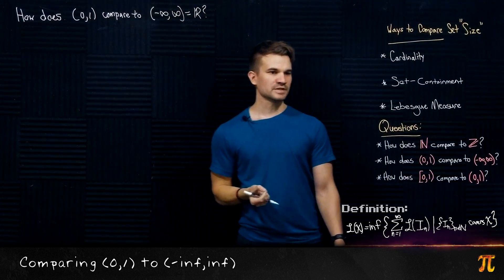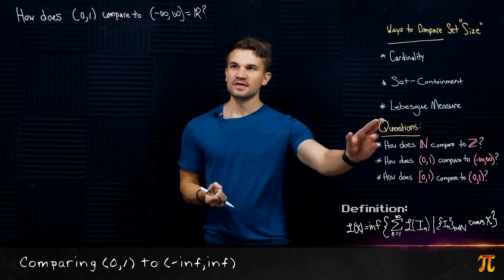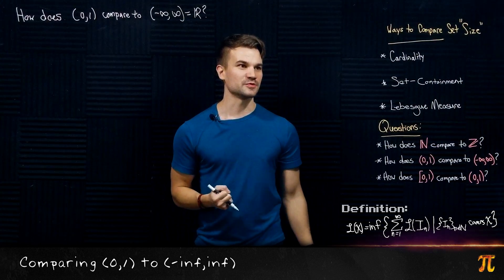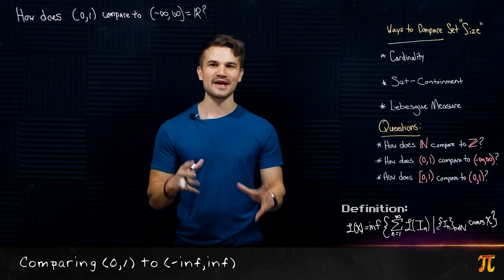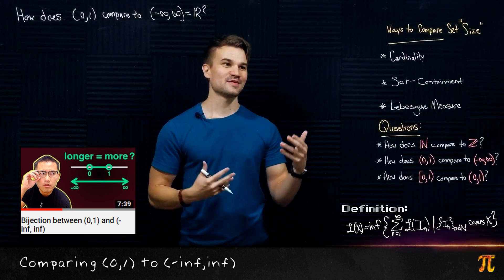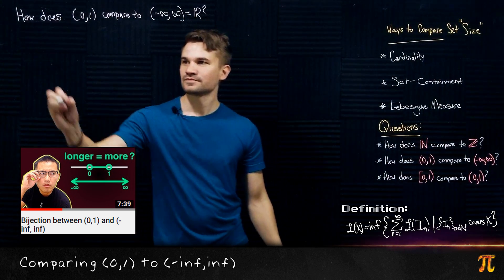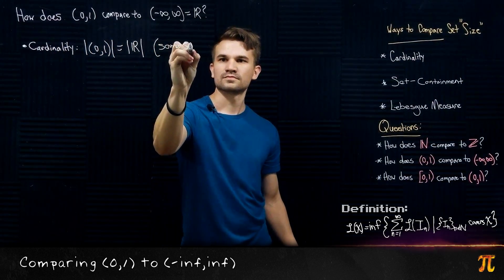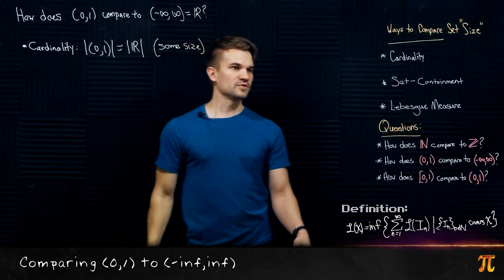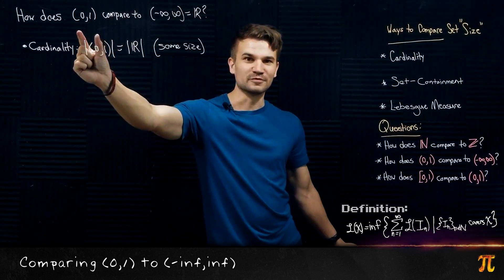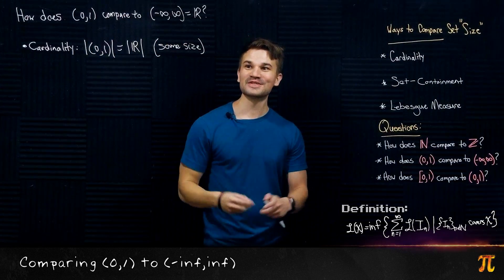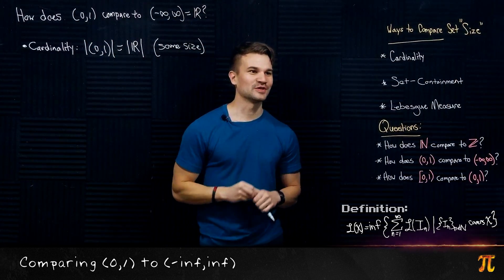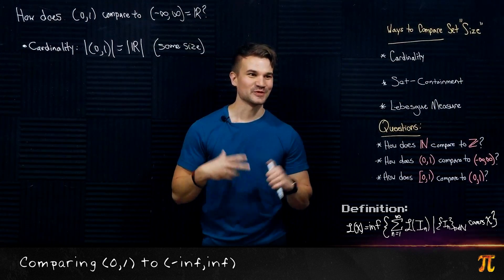We're comparing the open interval (0,1) to all the real numbers. How do these compare with respect to cardinality? We already know they have the same cardinality, so with respect to cardinality they are the same size. With respect to set containment, the interval (0,1) lies inside the real numbers, so the interval from 0 to 1 is smaller than the real numbers with respect to set containment.